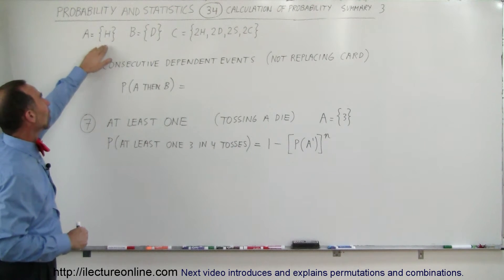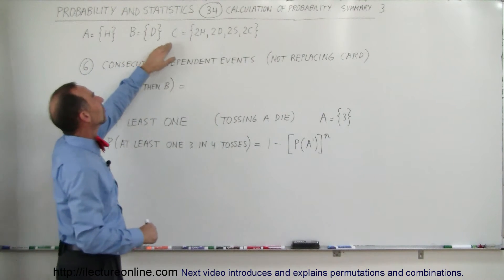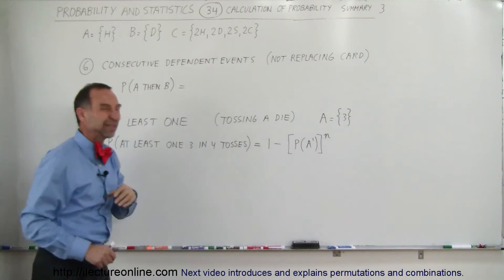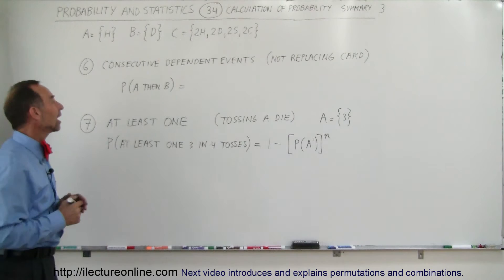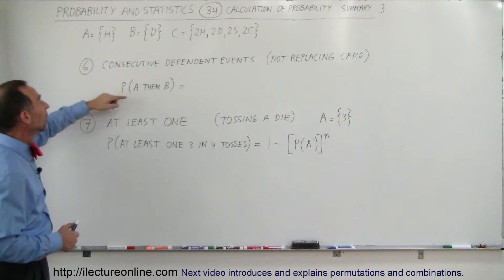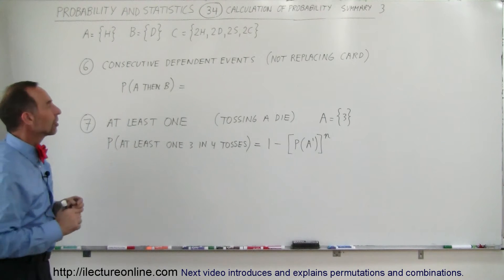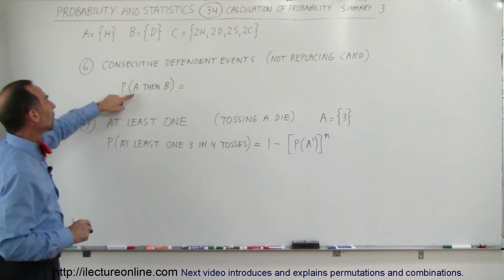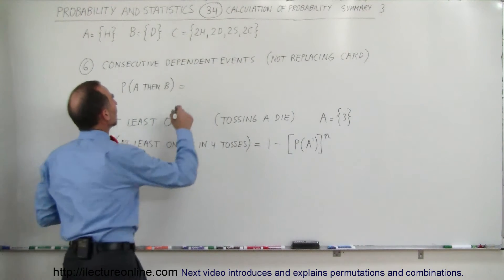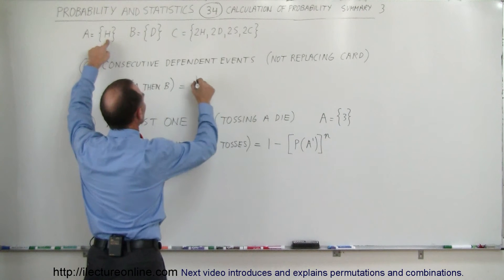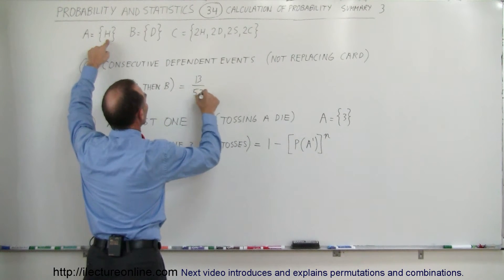So we have three events. A is all the hearts, B is all the diamonds, C is the two of hearts, two of diamonds, two of spades and two of clubs. I don't think we need event C in this case because here we have the probability of getting A and then B by not replacing the card. So that means what is the probability of A? So we take the probability of A which is hearts, there's 13 hearts and there's 52 cards. So that would be the probability of A occurring.